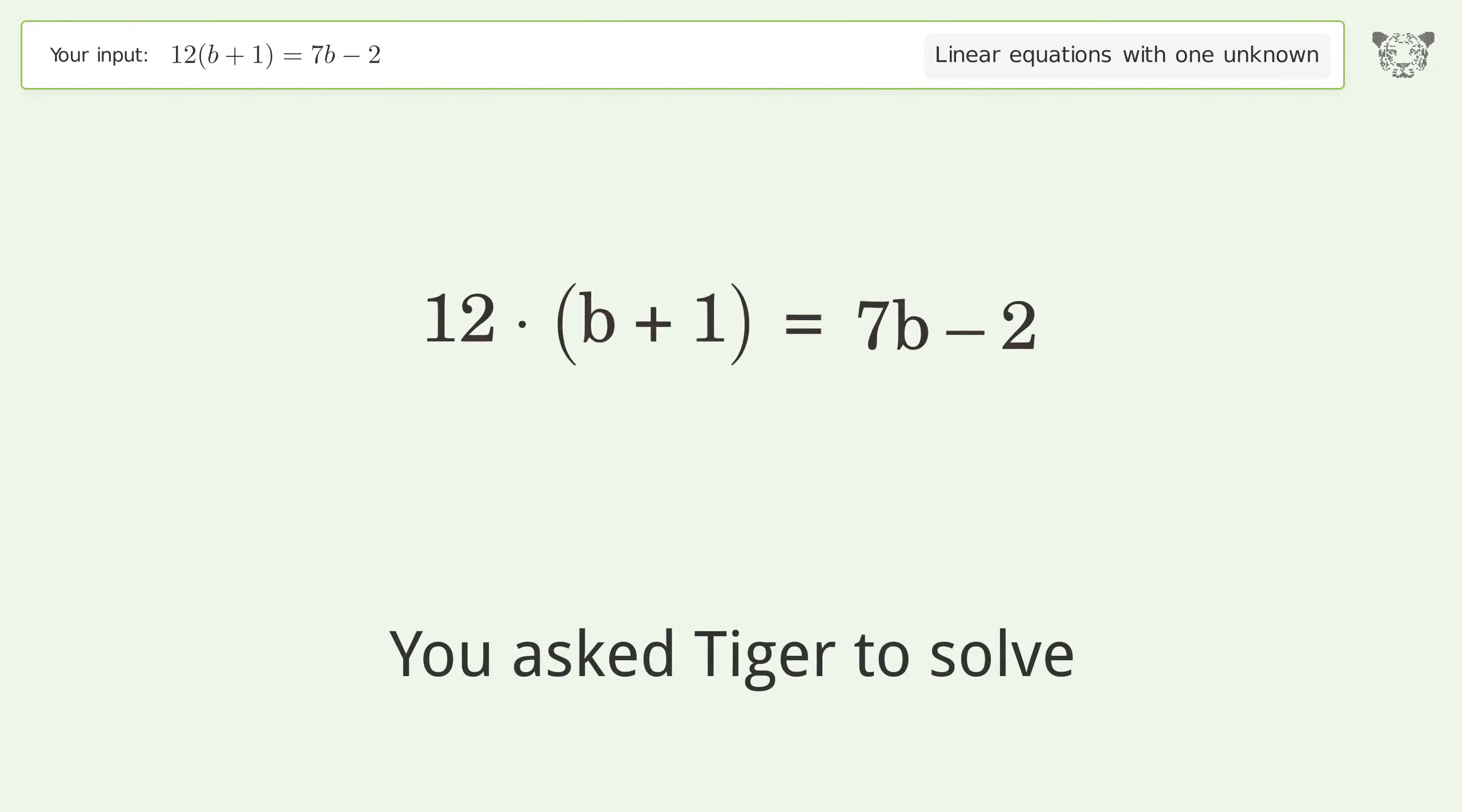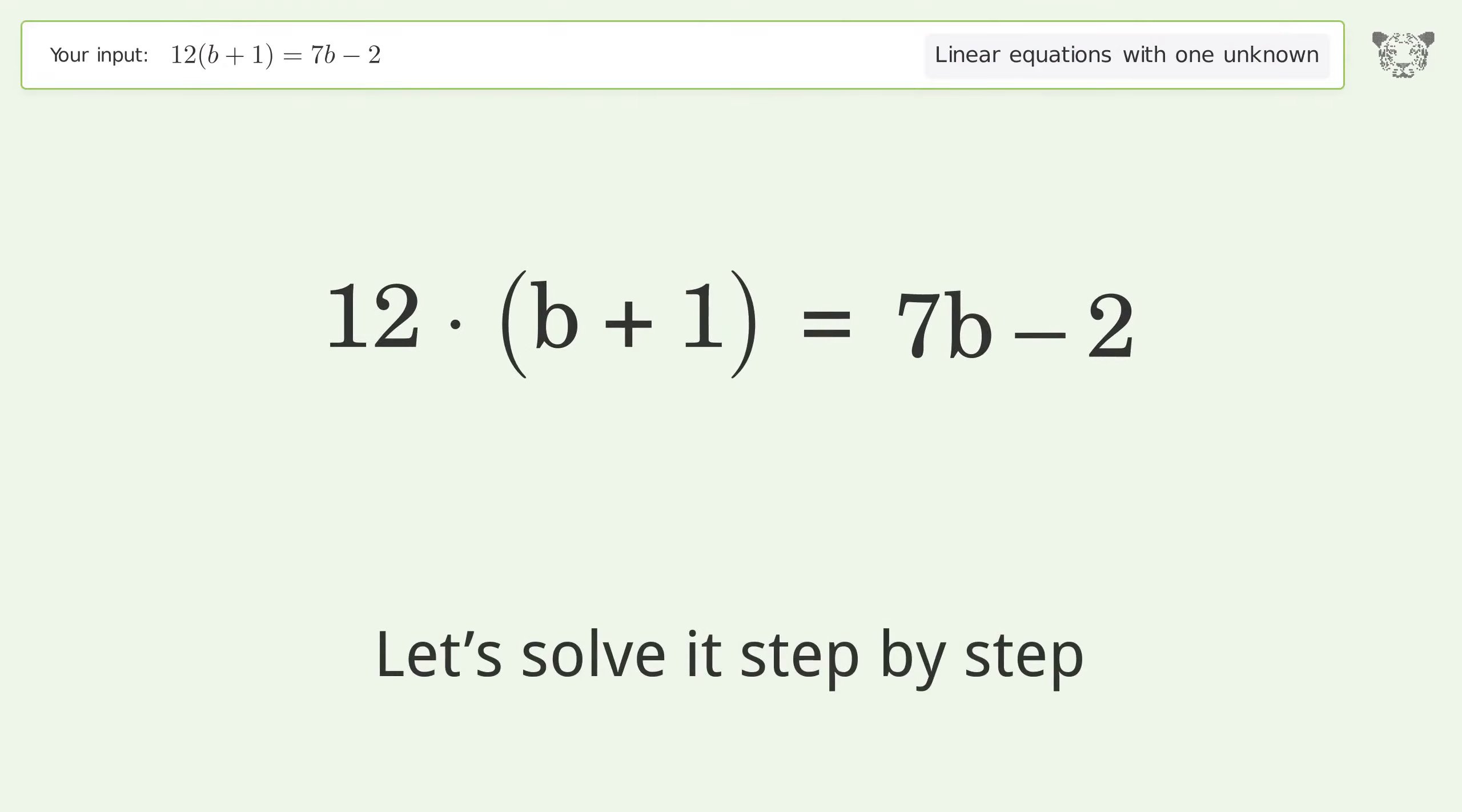You asked Tiger to solve this. This deals with linear equations with one unknown. The final result is b equals negative 14 over 5. Let's solve it step by step.